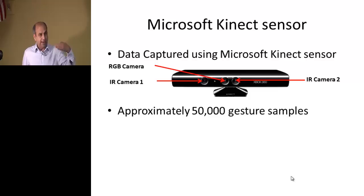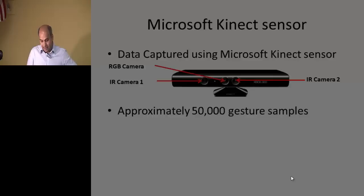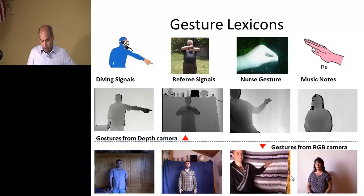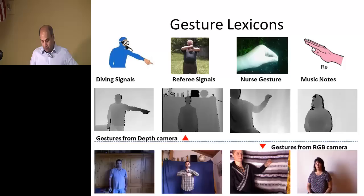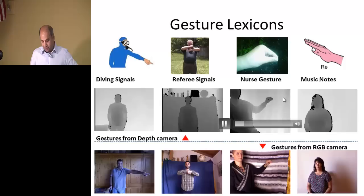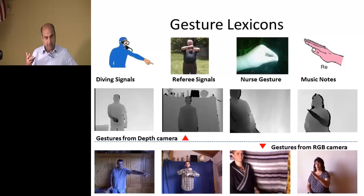The Kinect helps you get 3D because it has a 3D sensor — not a vision-based one, but a different sensor. These are examples of gestures: on one row are depth images, which are the 3D images showing intensity based on how far you are from the camera — this area is further than the person, this is closer. These are the simple RGB color images.